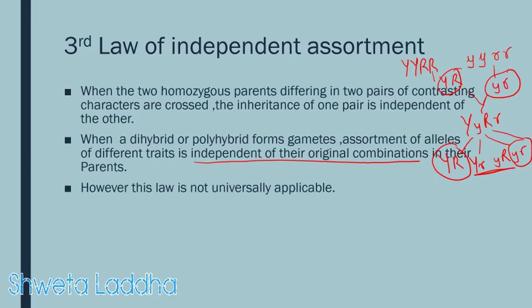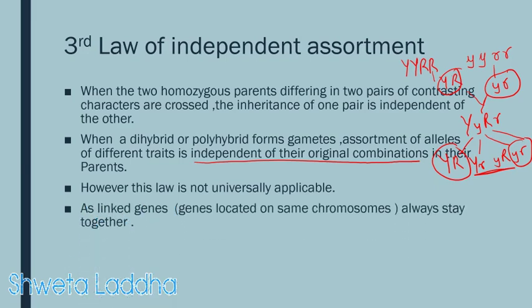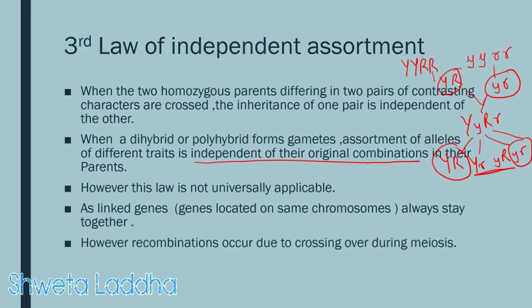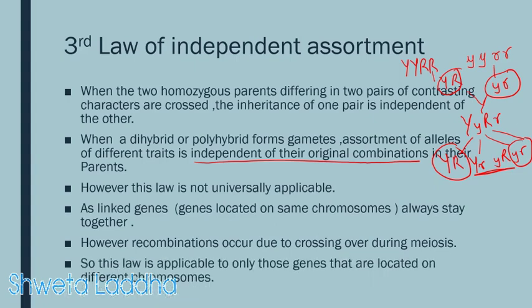However, this law is not universally applicable. For example, it is not applicable in the case of linked genes, because linked genes do not separate from each other — they do not independently assort but always stay together. Recombinations can occur during crossing over in meiosis. This law is applicable only to genes located on different chromosomes.